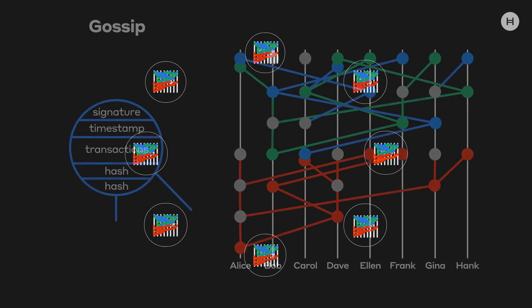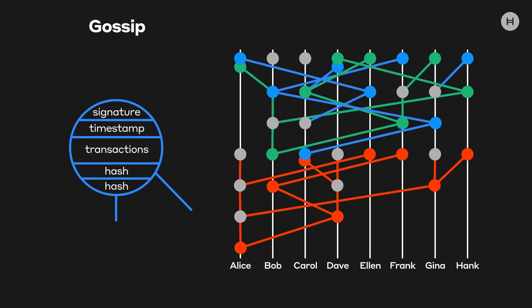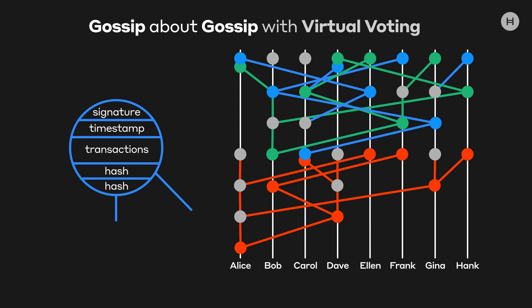We're not just gossiping the transactions. We are actually gossiping out, indirectly, this graph itself — we're gossiping about the gossip. We are actually talking about how we're talking. And once we all have this hash graph in memory, we can just look at it and do virtual voting. Which means we just look at it and we know the timestamp of when each person received each message. We don't have to talk to each other about it, we don't have to send out additional messages about when you received things and about what orders to put things in. You get it for free. Virtual voting.